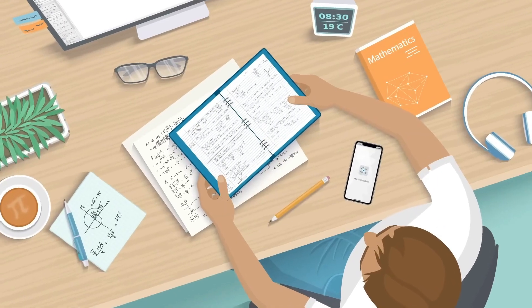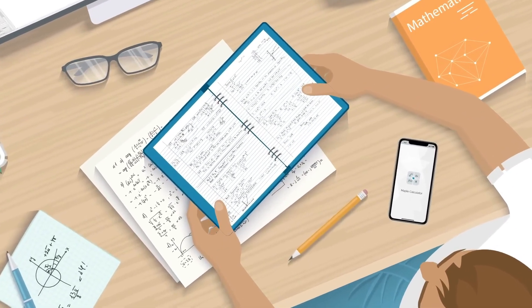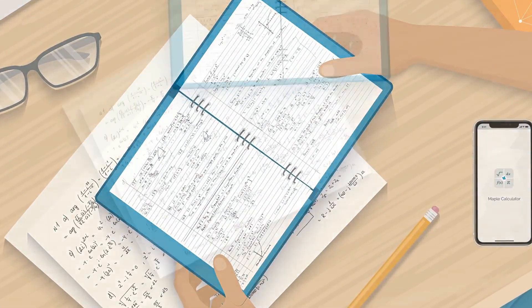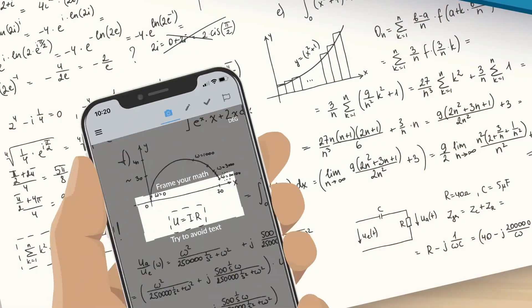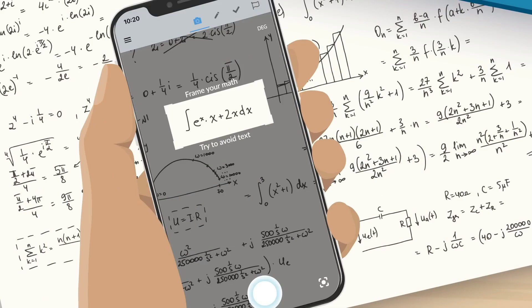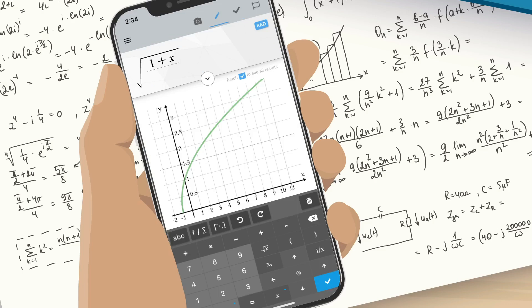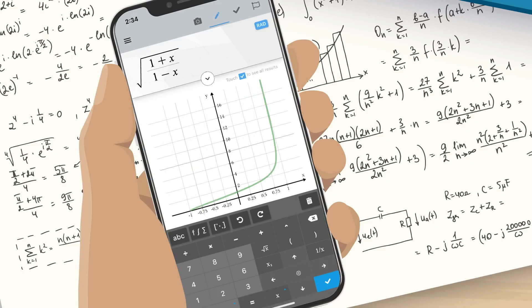Whether you're doing simple calculations or working on university-level math problems, Maple Calculator can do it all. Solving a math problem and want to check your answer, simply take a picture of your question and select the mathematical operation you want to perform, or you can enter the problem using the built-in math editor, and watch the graph change instantly as you change your problem.